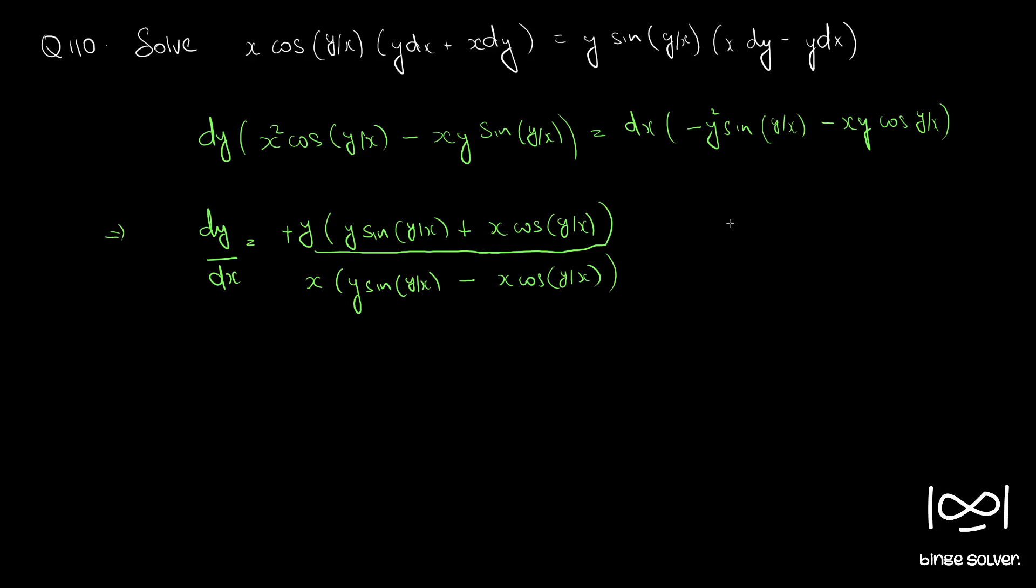So we will use the substitution y equal to vx. Let this be equation 1. And differentiating 2 with respect to x on both sides, we get dy/dx is equal to v plus x dv/dx. This is equation 3.